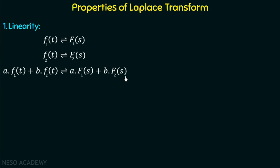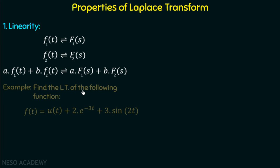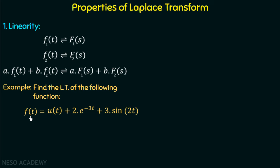Let us take one example to understand the linearity property better. The example is: find the Laplace transform of f(t) = u(t) + 2·e^{-3t} + 3·sin(2t). Now we can understand the importance of Laplace transform properties. In this case, we don't have to find the Laplace transform of f(t) by substituting into the complicated expression from the previous lecture. If we have the Laplace transforms of u(t), e^{-3t}, and sin(2t), we can easily find the Laplace transform of f(t) using the linearity property.